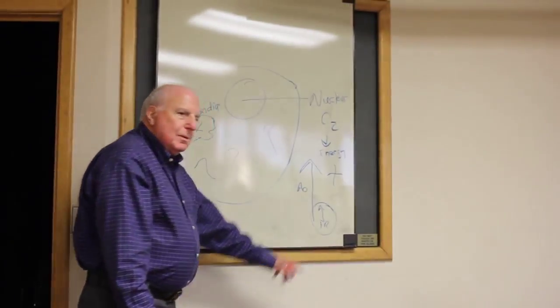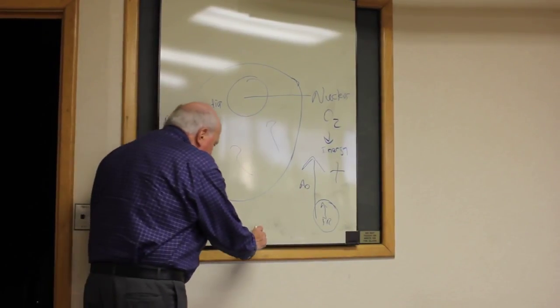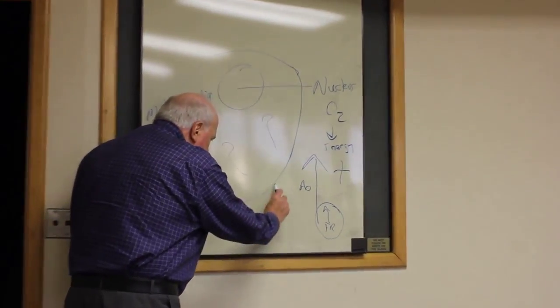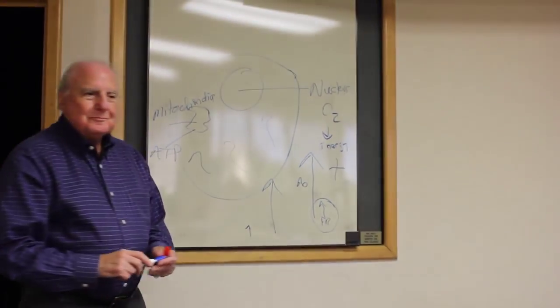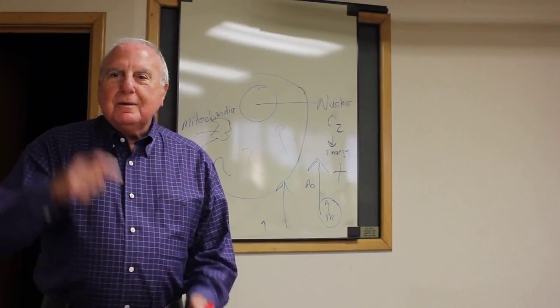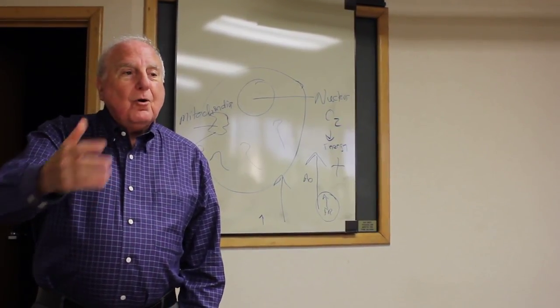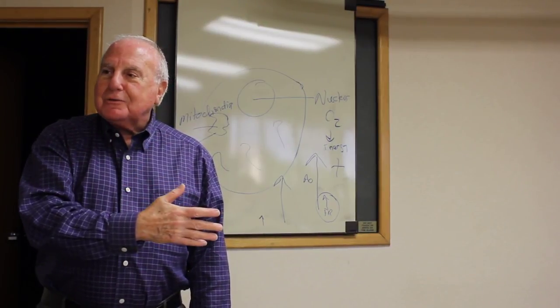So we end up, when we're 30, 35 or so, with this many antioxidants, and this many free radicals. That's called oxidative stress. The excess production of free radicals over your ability to neutralize them with antioxidants.